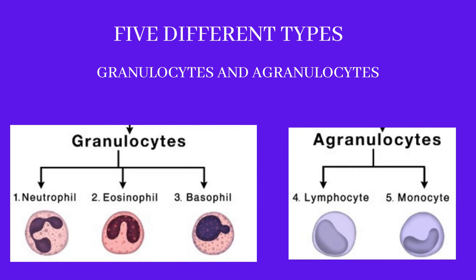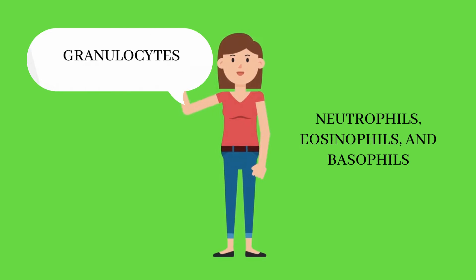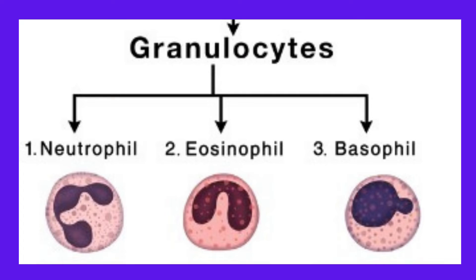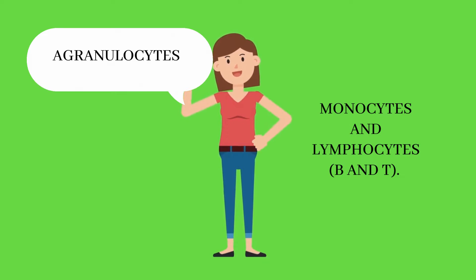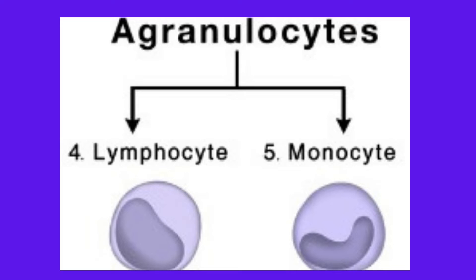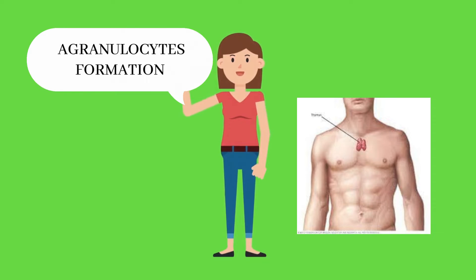Granulocytes have granules in the cytoplasm, while agranulocytes are without granules in the cytoplasm. We can place neutrophil, eosinophil, and basophil in granulocytes. We can place monocyte and lymphocyte — which has two types, B and T that we have discussed in the lecture on immunity — in agranulocytes.